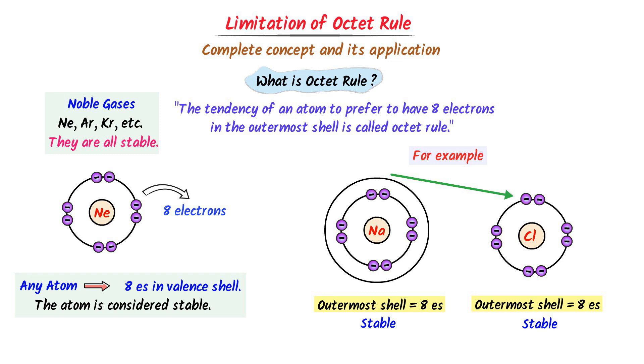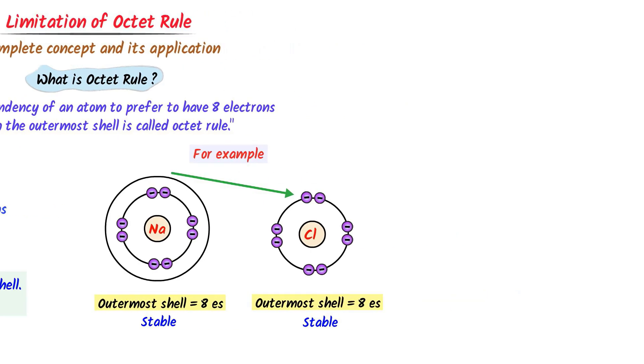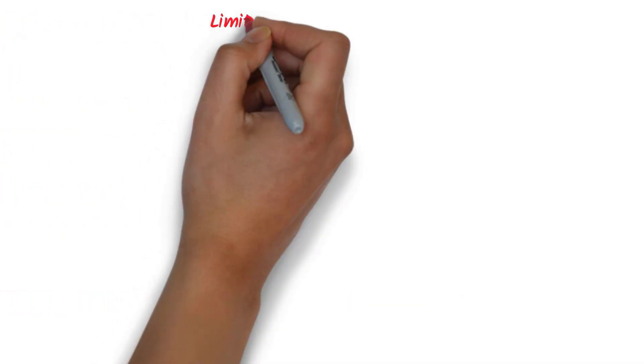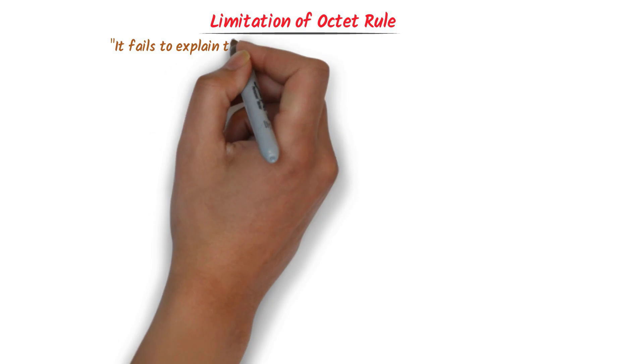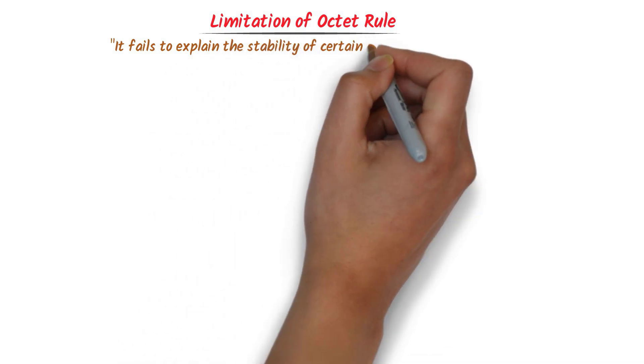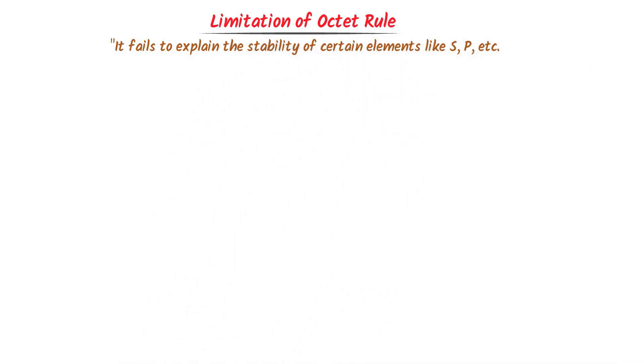Now we will learn the limitations of the octet rule. In simple words, limitations of the octet rule means it fails to explain the stability of certain elements like sulfur, phosphorus, etc. The first limitation is hypovalent species.